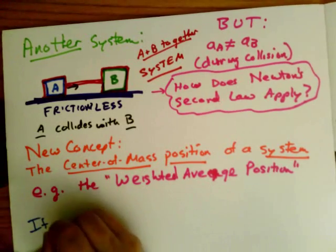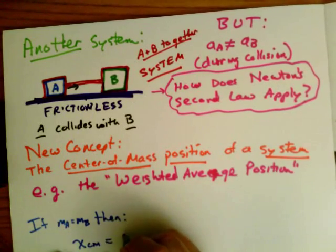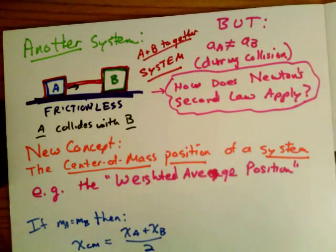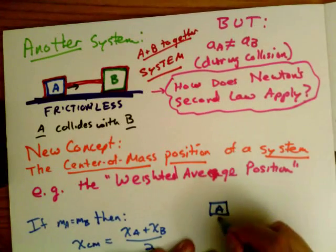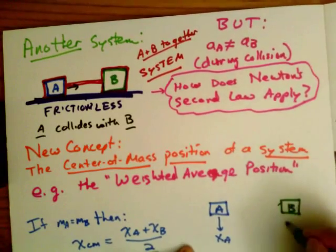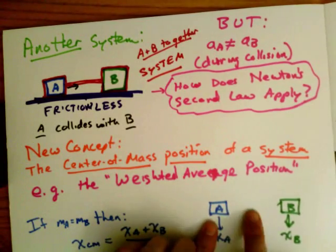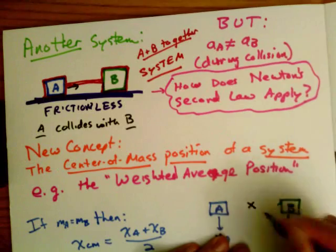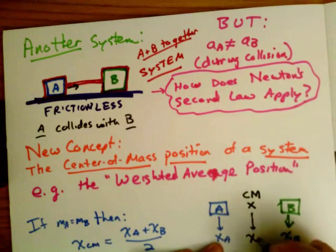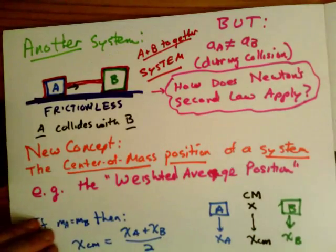We mean the average position but weighted by the mass of each particle in the system. So for example, if the mass of A were equal to the mass of B, then the center of mass position would be the sum of the two positions divided by two. That means if I have position A at xA and block B at position xB, then the center of mass point is halfway between the two. The center of mass point is halfway between the two positions. It's the average position if the two masses are the same.